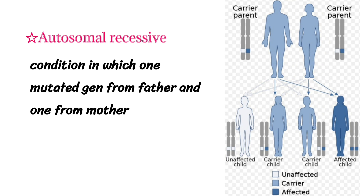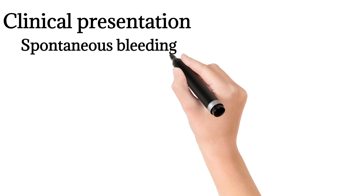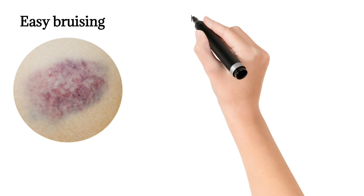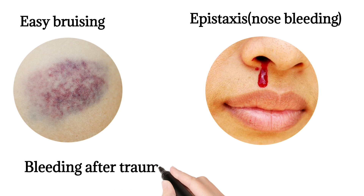Clinical presentation includes spontaneous bleeding in tissues, muscles, and joints. Patients also experience easy bruising, epistaxis (also called nose bleeding), and bleeding after trauma and surgery.